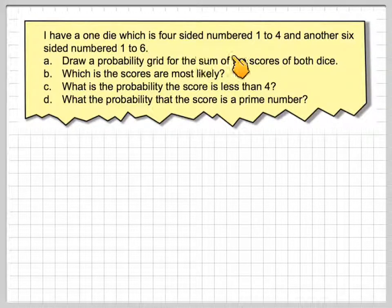I have one dice which is four-sided numbered 1 to 4 and another which is six-sided 1 to 6. Draw a probability grid for the sum of the scores of both dice. Which scores are most likely? What is the probability the score is less than 4? What is the probability the score is a prime number?